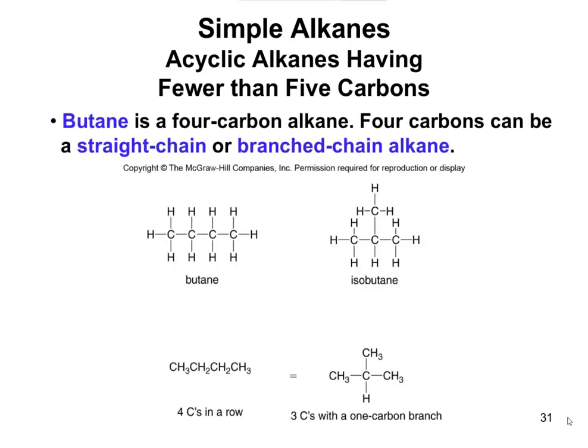Butane is a four-carbon alkane with a formula of C4H10. Butane can actually have two different representations: butane and isobutane. These are not equal to each other — they are actually called isomers of each other.